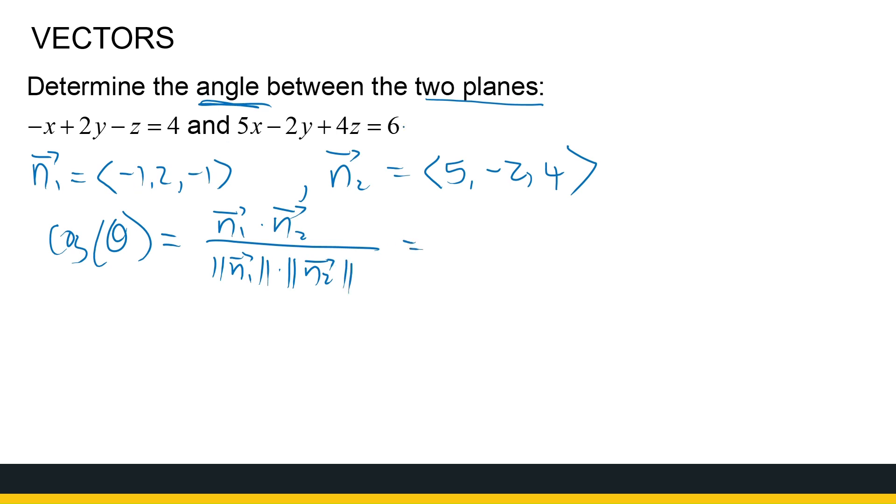So if I look at the dot product, I've got -5, -4, so -5, -8 is -13. Then the magnitude of vector n1 is 1 + 4 + 1, that's 6, times 25 + 4 is 29, plus 16 is 45. So there we go.